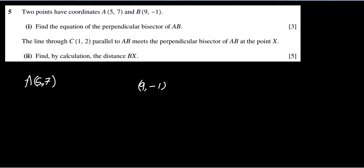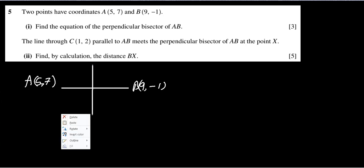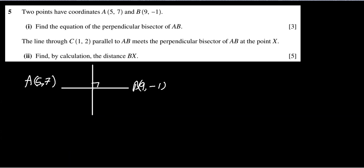So if this is A and this is B, and the line is between them, we have to find the equation of the perpendicular bisector of AB. A perpendicular bisector will be a line which is exactly in the middle and 90 degrees to the existing line AB.